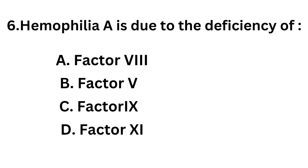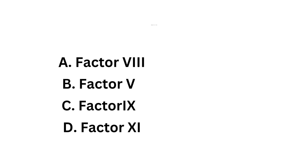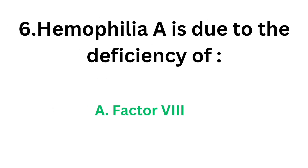Question number six: haemophilia A is due to the deficiency of — option A factor 8, option B factor 5, option C factor 9, option D factor 11. The correct answer is option A, factor 8.